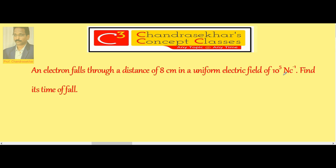Acceleration gained by the electron in any electric field is EQ by M. So it is 10 to the power of 5, charge of the electron 1.6 times 10 to the power of minus 19, divided by mass of the electron 9 times 10 to the power of minus 31.